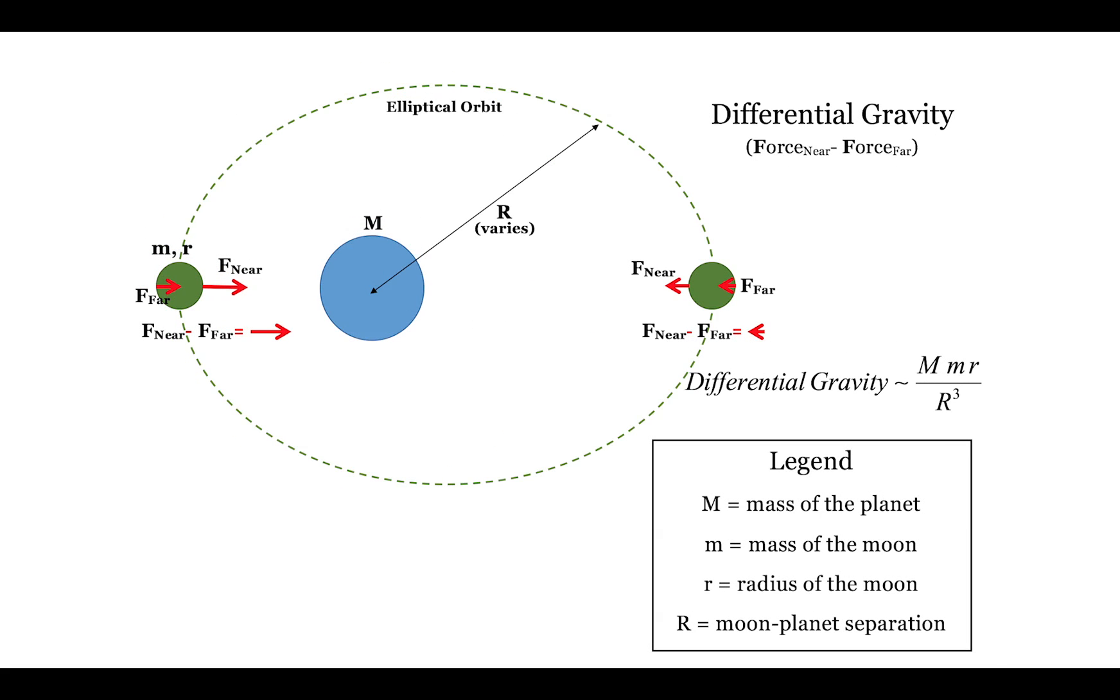However, for a moon in an elliptical orbit, the differential gravity varies. It is much larger when the moon is close to the planet than when the moon is far away. This variation in differential gravity stretches the moon as it orbits.